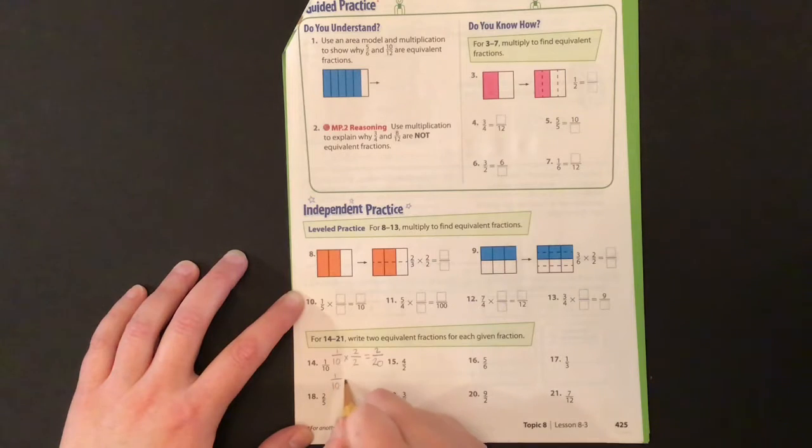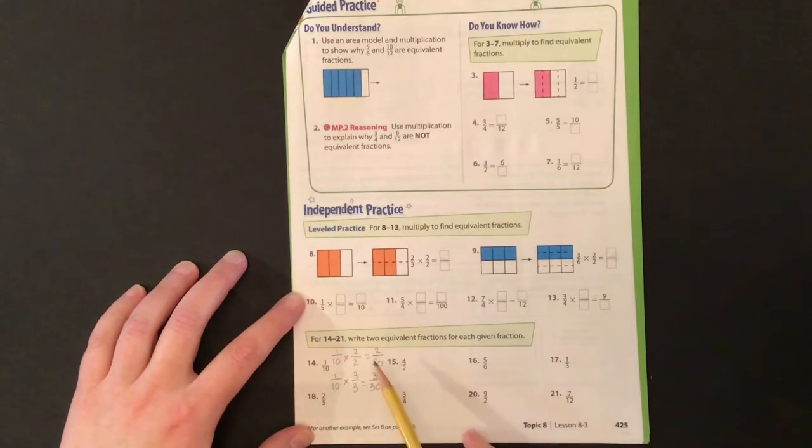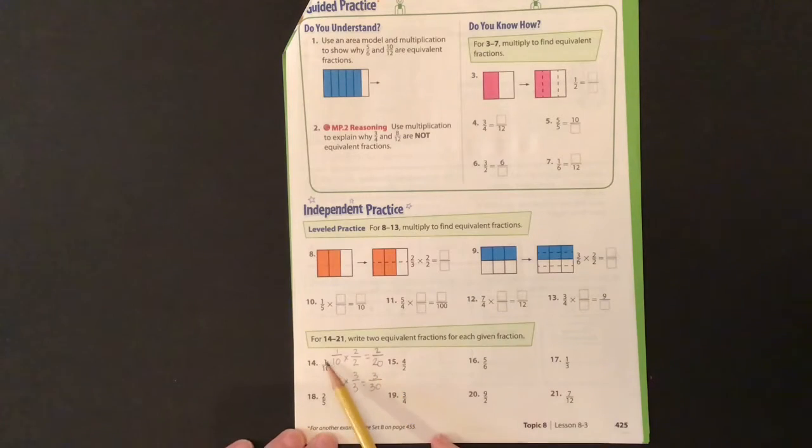I can go ahead and try it with 3 thirds. 1 times 3 is 3, 10 times 3 is 30. Now we don't have fraction pieces, but if we were to show 1 tenth, 2 20ths, and 3 30ths, they would all be equivalent. As you can see, the shortcut comes in really handy though, because when we're working with 20ths and 30ths, those pieces are really small and hard to draw.